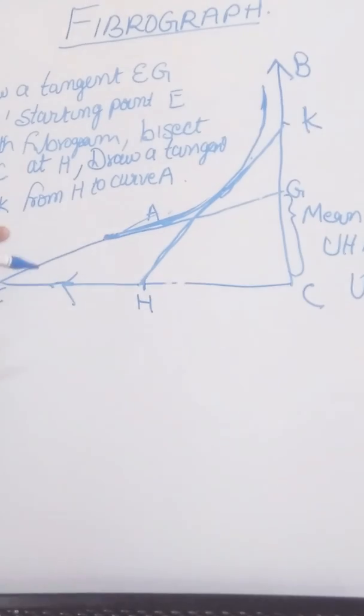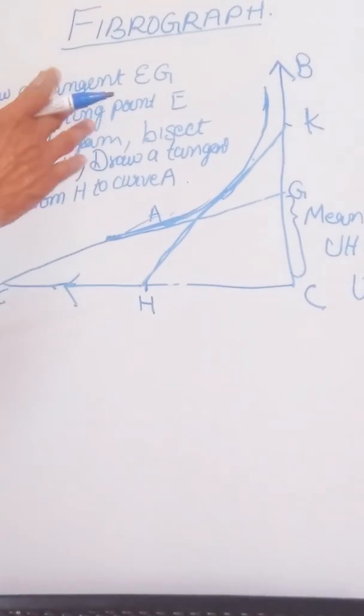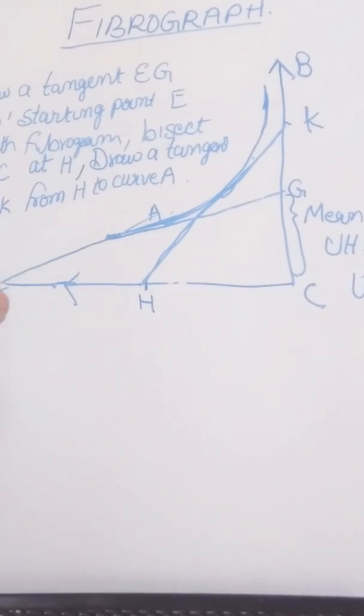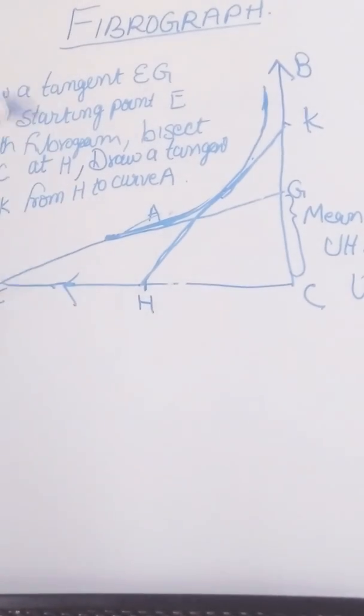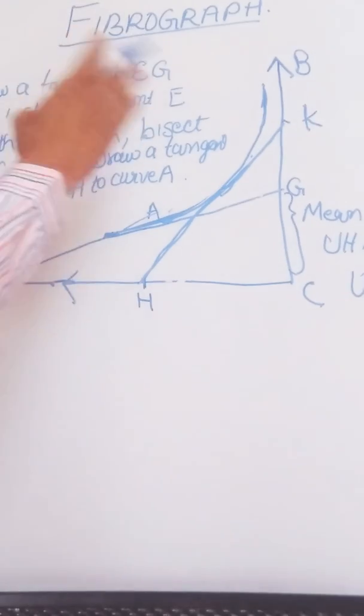Mean length as measured by the fibrograph is an estimate of the average length of the cotton fibers longer than approximately one-fourth of an inch in the test specimen.